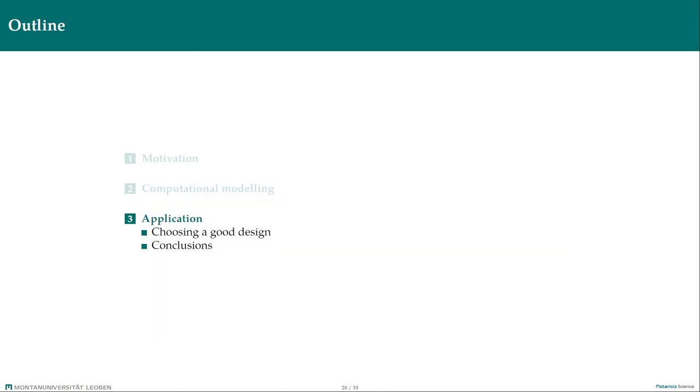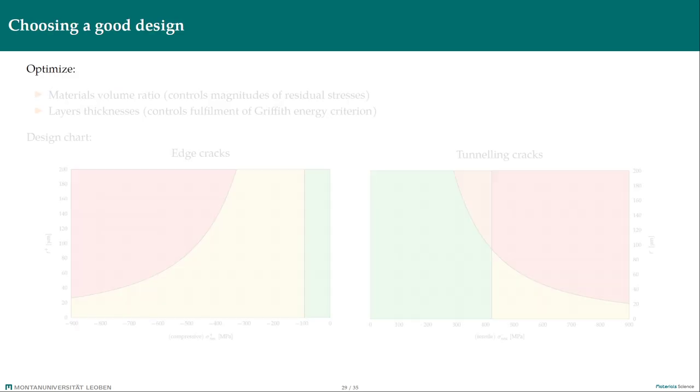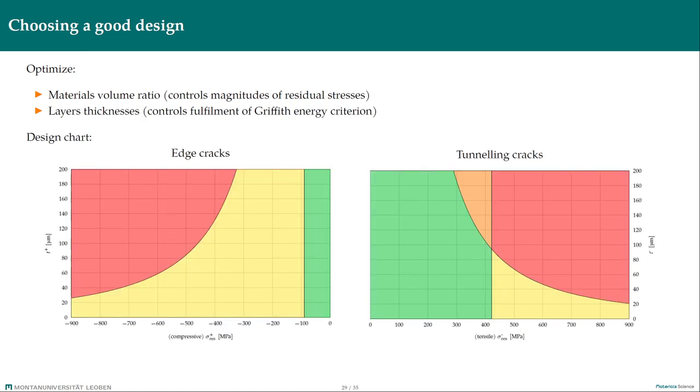Finally, let us try to use these results for designing a good architecture. The sintering temperature is more or less set. We can choose the volume ratio between two materials or more materials, which govern the magnitude of residual stresses. Additionally, this volume ratio can be distributed between layers of different thicknesses. Using two graphs, which we obtained for edge cracks on the left side and tunneling cracks on the right side, we would calculate residual stresses in our layers, and then look if we are outside of the right regions, where both criteria, stress and energy criterion are fulfilled, hence the cracks may initiate.